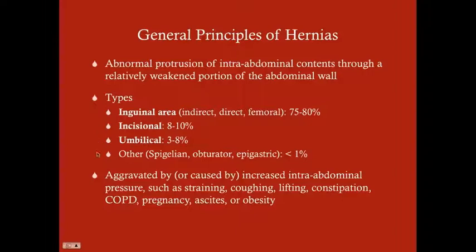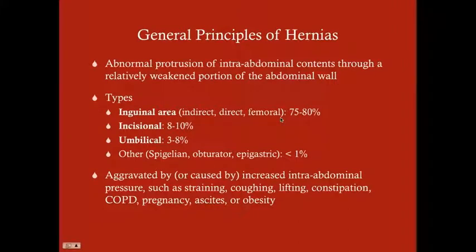The types of hernias: inguinal area hernias include indirect hernia, direct hernia, and femoral hernias. Femoral hernias don't involve the inguinal canal at all — they go underneath the inguinal ligament. These three make up about 75 to 80% of all hernias in the U.S. Incisional hernias are the next most common, then umbilical hernias — primarily a problem of pediatrics. Some other hernias are much more rare: spiegelian, obturator, and epigastric hernias combined make up less than 1% of all hernias.